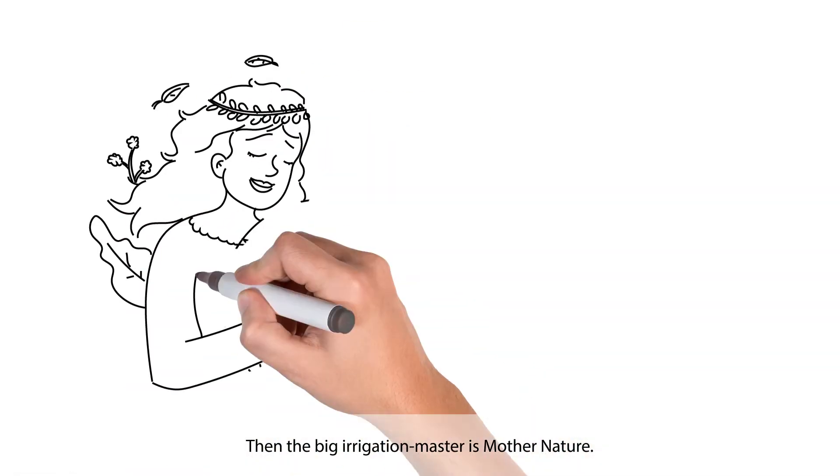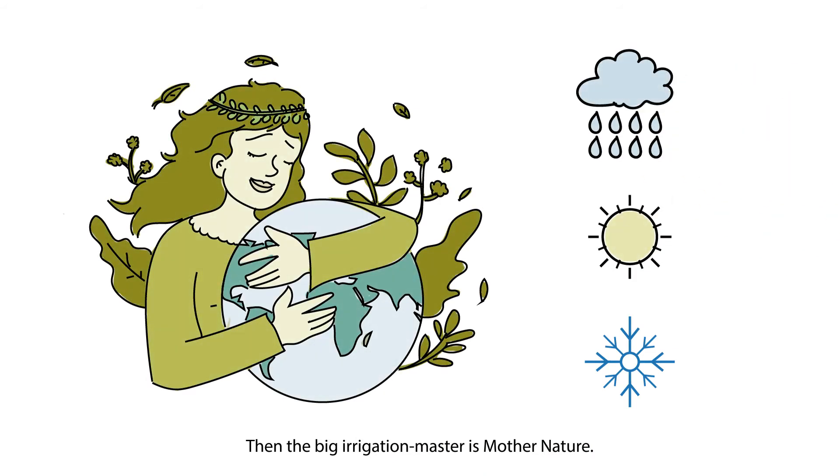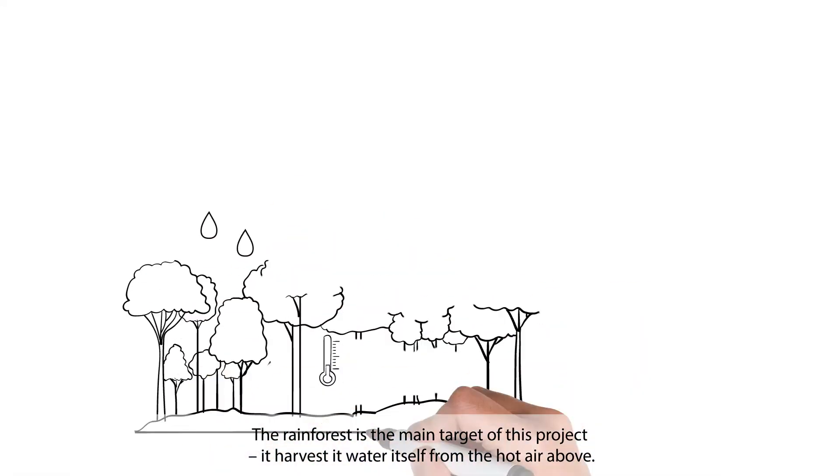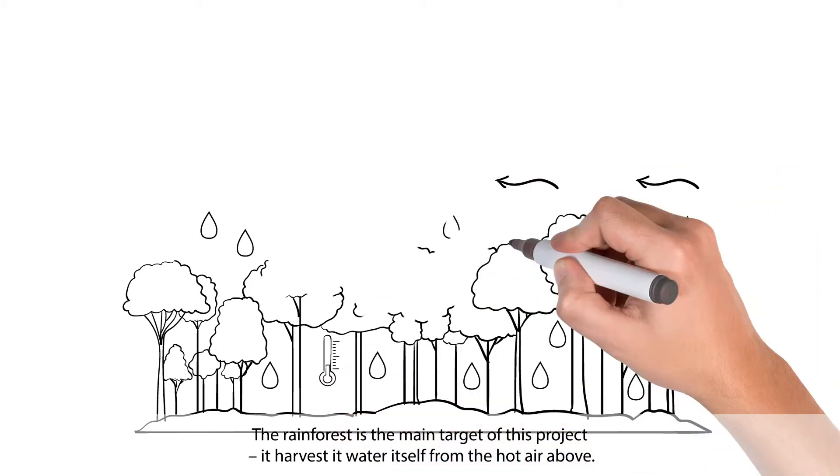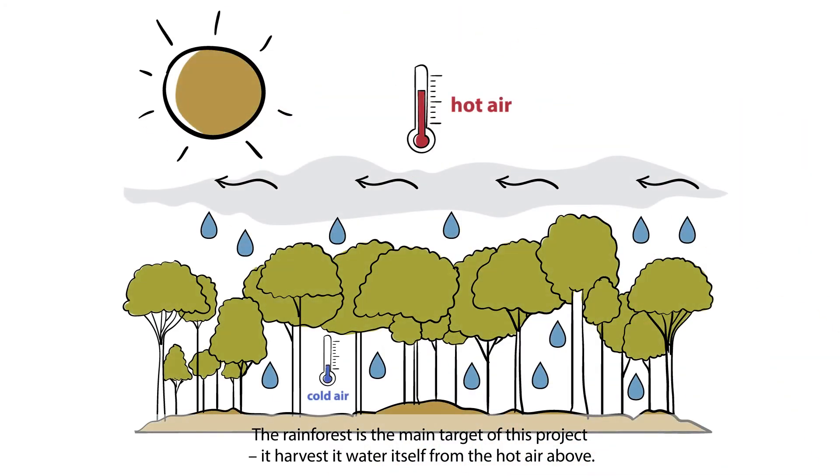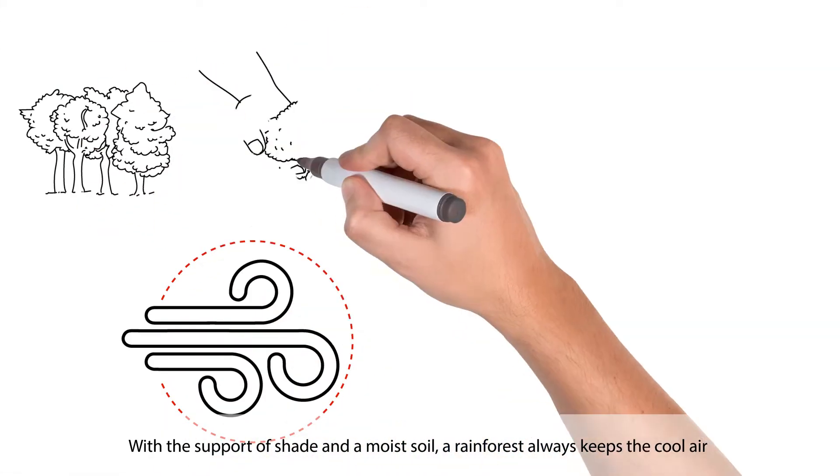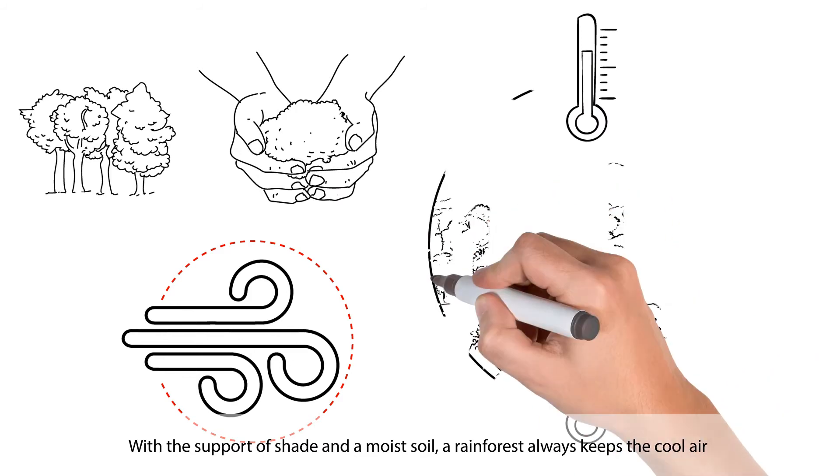Then the big irrigation master is Mother Nature. The rainforest is the main target of this project. It harvests its water itself from the hot air above. With the support of shade and a moist soil, a rainforest always keeps the cool air.